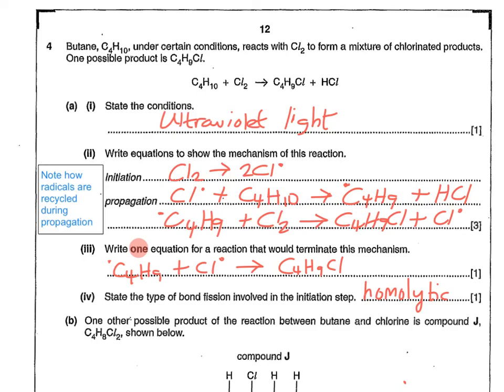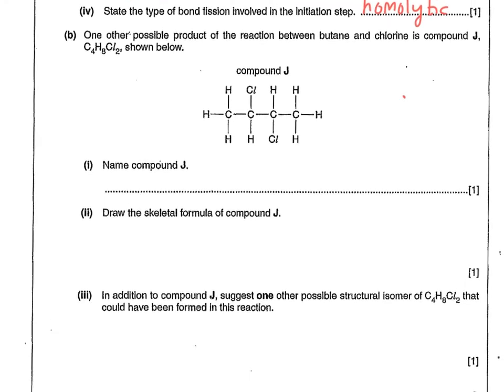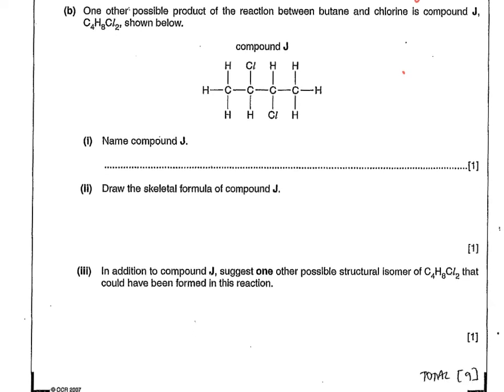So let's now move the page down and have a look at the last part. It says, one other possible product of the reaction between butane and chlorine is compound J. So we have to name compound J. So this is going slightly outside the scope of this particular video clip, but I'm assuming that you've done some naming of organic compounds already, because we usually cover free radical substitution as we do alkanes, which includes naming as well.